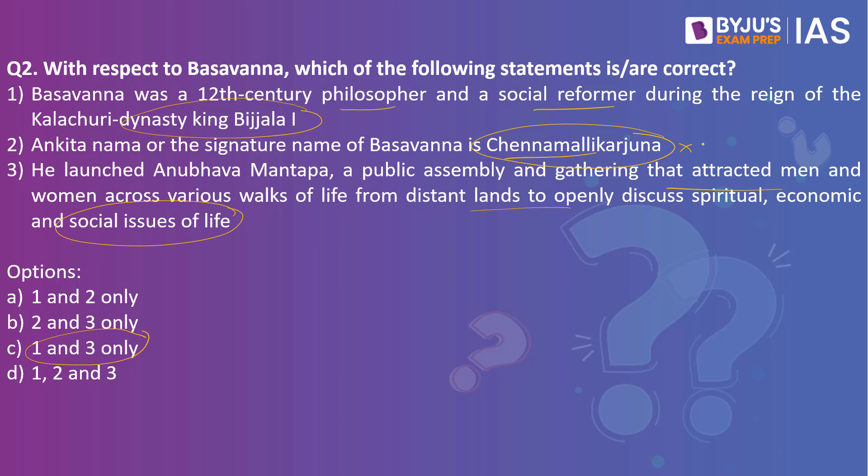The third statement is correct — Basavanna did launch Anubhava Mantapa. Anubhava is a Kannada word meaning 'experiences,' and Mantapa means 'hall.' So it is a hall run as an institution where people who experienced multiple issues — social, economic, philosophical, and spiritual — would all come together and discuss. Anubhava Mantapa basically means 'experience hall.' People would come to this institution to clarify all their dilemmas. This institution was created by Basavanna.